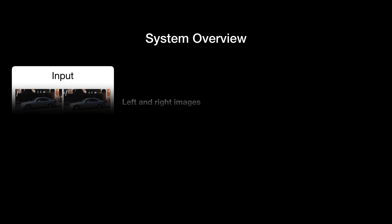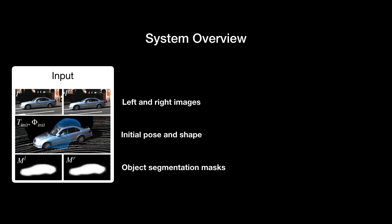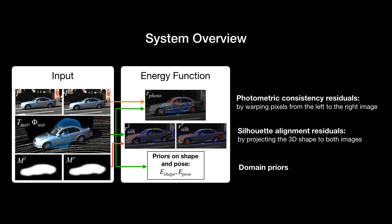In this slide, we will give an overview of our system. As input, our method takes in the stereo image pair, an initial pose and shape of the car, and the object segmentation masks. Based on the inputs, we build up three energy terms.